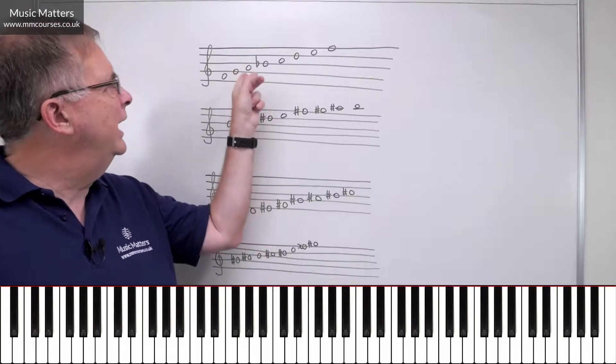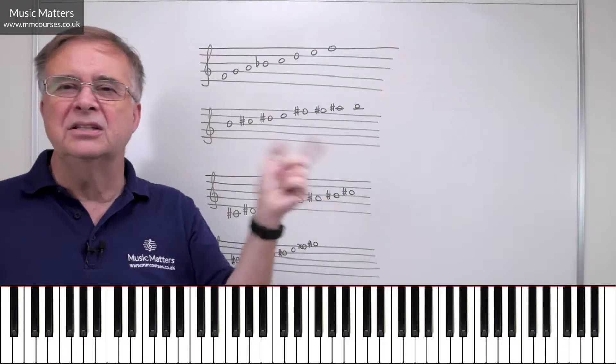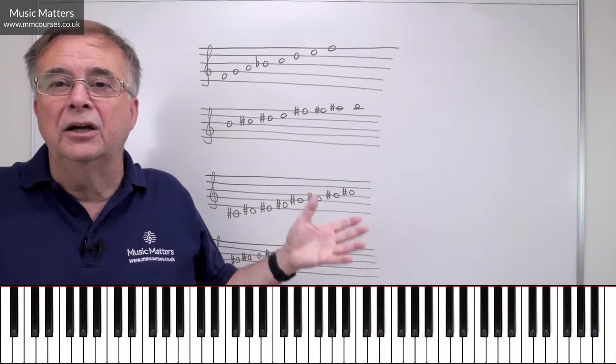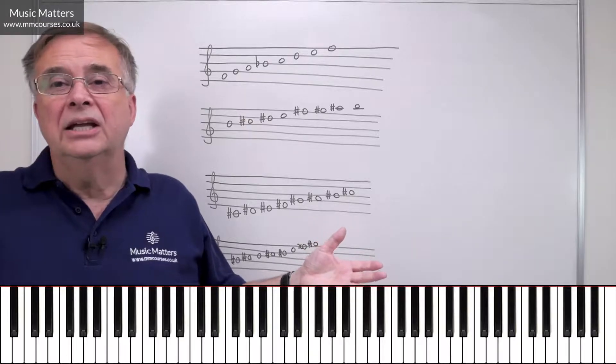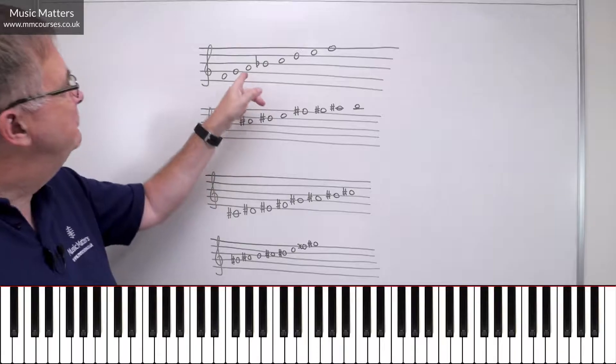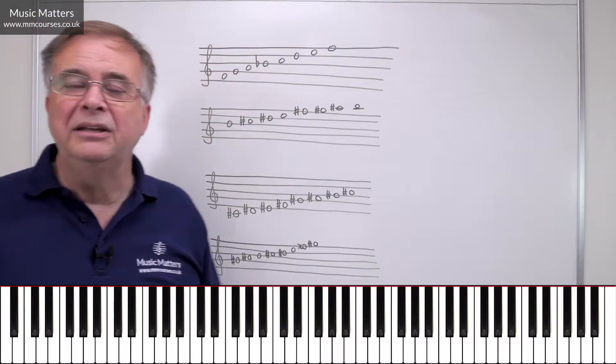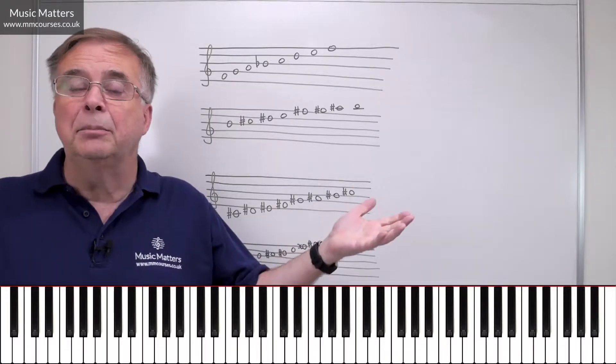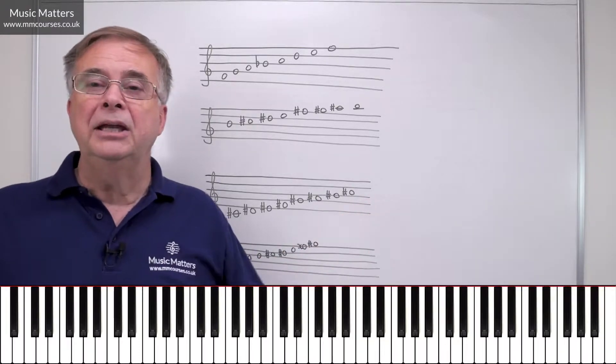Because if you had the note A and A-sharp in the same scale, the same key, every time you want to write the note A, you've got to indicate, well, is it A-natural, or is it A-sharp? Whereas in fact, if you call this one A, and you call the next one B-flat, it's pretty obvious, isn't it? And you can put your B-flat in the key signature, and then the player knows that every time he or she bumps into B,